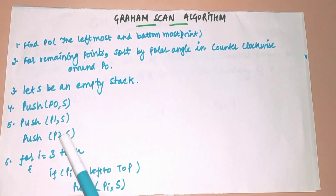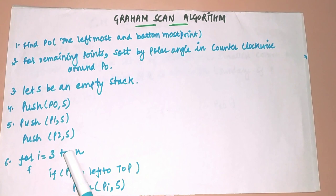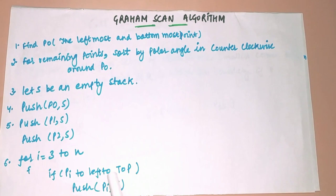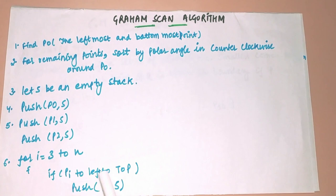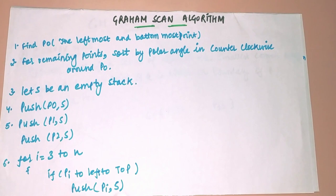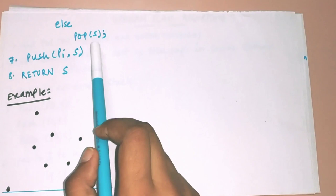Step 4 — push p0, p1, and p2 (the starting three points) into the stack. Step 6 — for i from 3 to n, for the remaining points: if the current point pi is to the left of the top of the stack, push pi into the stack; else pop the top of the stack, then push pi. The last step is to return the stack S.